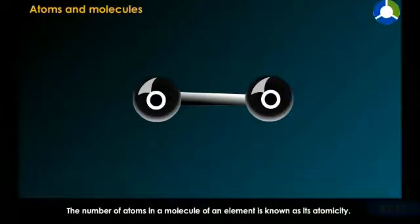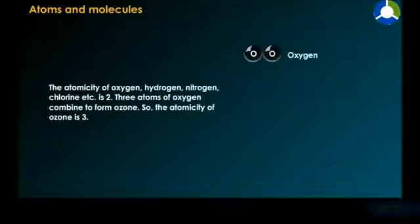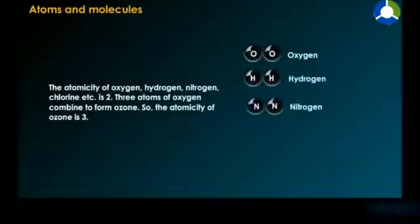The number of atoms in a molecule of an element is known as its atomicity. The atomicity of oxygen, hydrogen, nitrogen, chlorine, etc. is two.